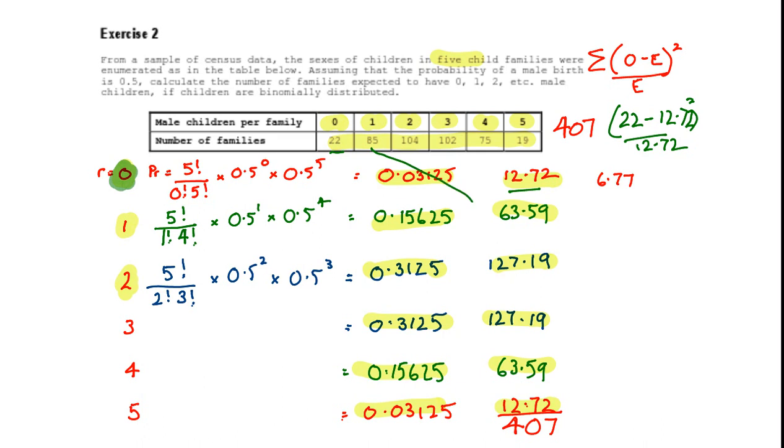-squared it's 85 compared to 63.59, 105 compared to 127.19, 102 again compared to 127.19, 75 to 63.59 and then lastly 19 to 12.72.